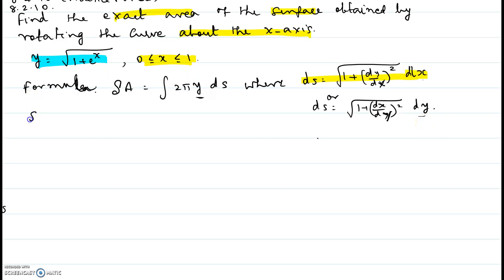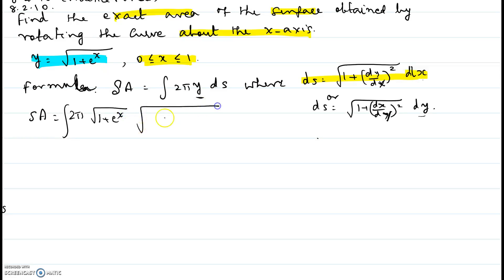So the integral is 2π times y, where y is the square root of 1 plus e to the x, multiplied by the square root of 1 plus (dy/dx)² dx, since the limits of x are given.